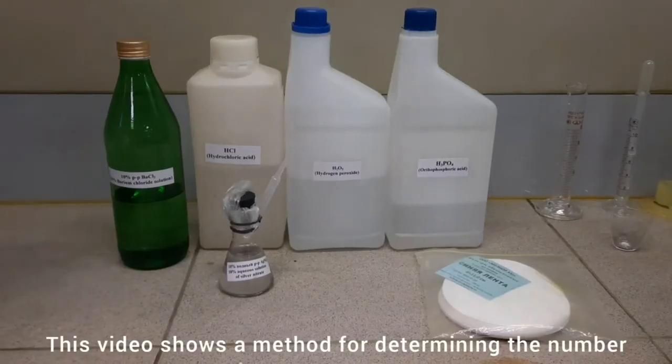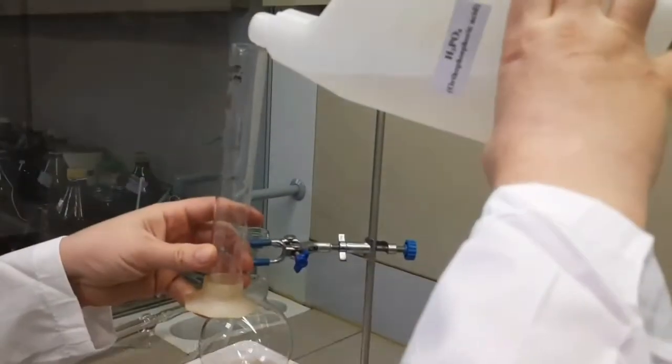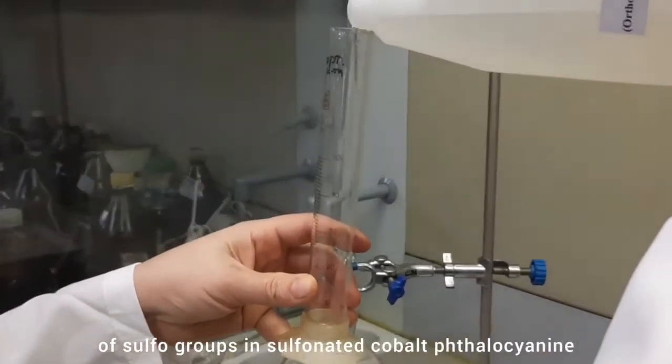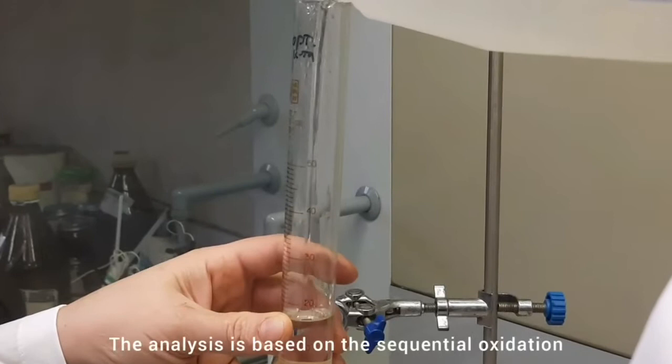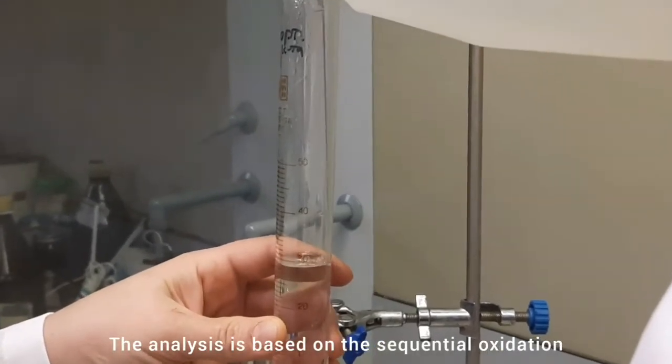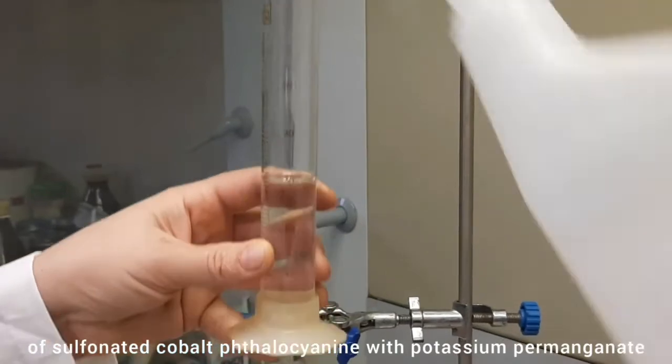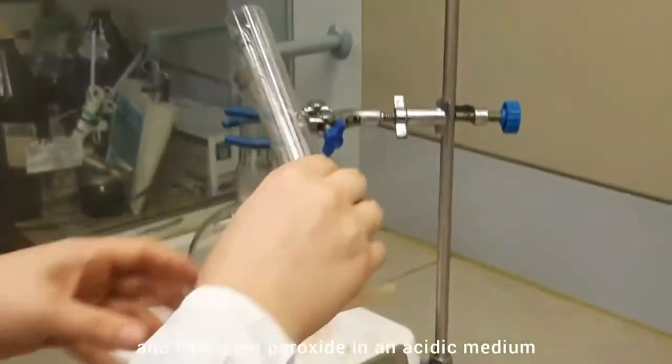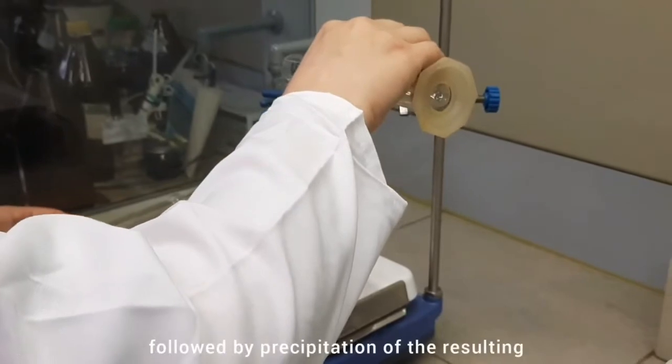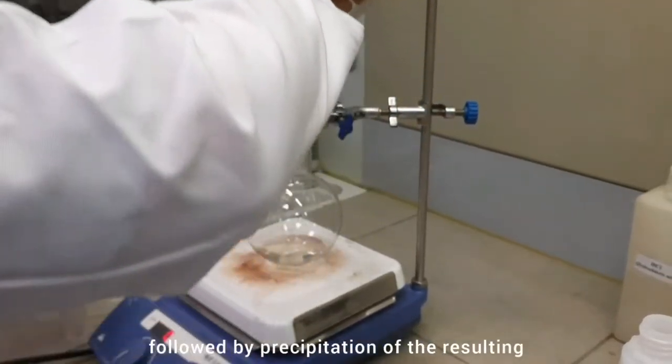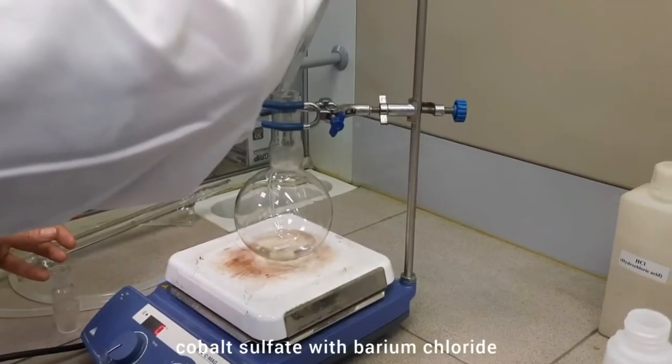This video shows the method for determining the number of sulfa groups in sulfonated cobalt phthalocyanine. The analysis is based on the sequential oxidation of sulfonated cobalt phthalocyanine with potassium permanganate and hydrogen peroxide in an acidic medium.